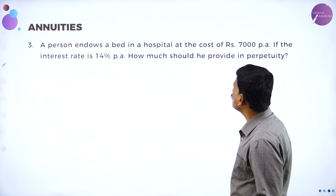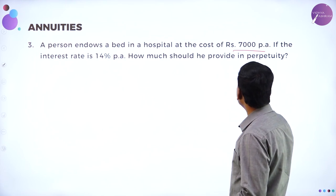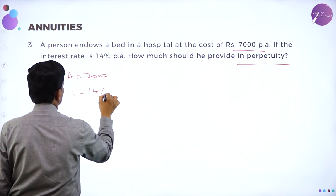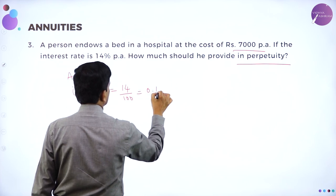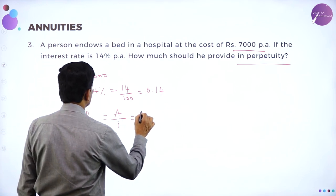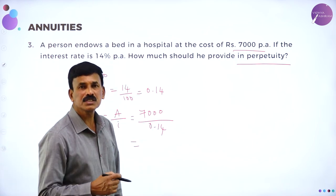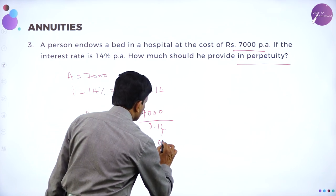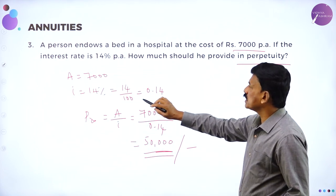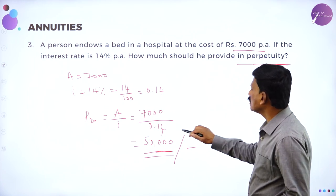A person endows a bed in a hospital at the cost of rupees 7000 per annum. If the interest rate is 14 percent per annum, how much should be provided in perpetuity? A equals 7000, I equals 14 percent, that is 0.14. P∞ equals A divided by I equals 7000 divided by 0.14 equals 50,000. Therefore, the required perpetuity is rupees 50,000.